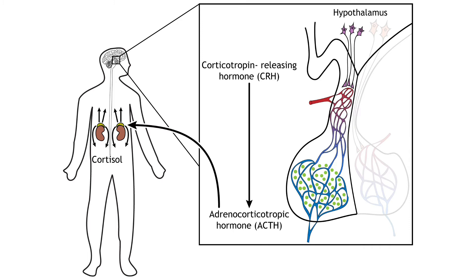Cortisol travels through the body and has many effects that prepare the body for either fleeing or fighting the stressor. Promotion of energy use, for a quick escape or for defense, occurs through the release of glucose, the sugar the body uses for energy.